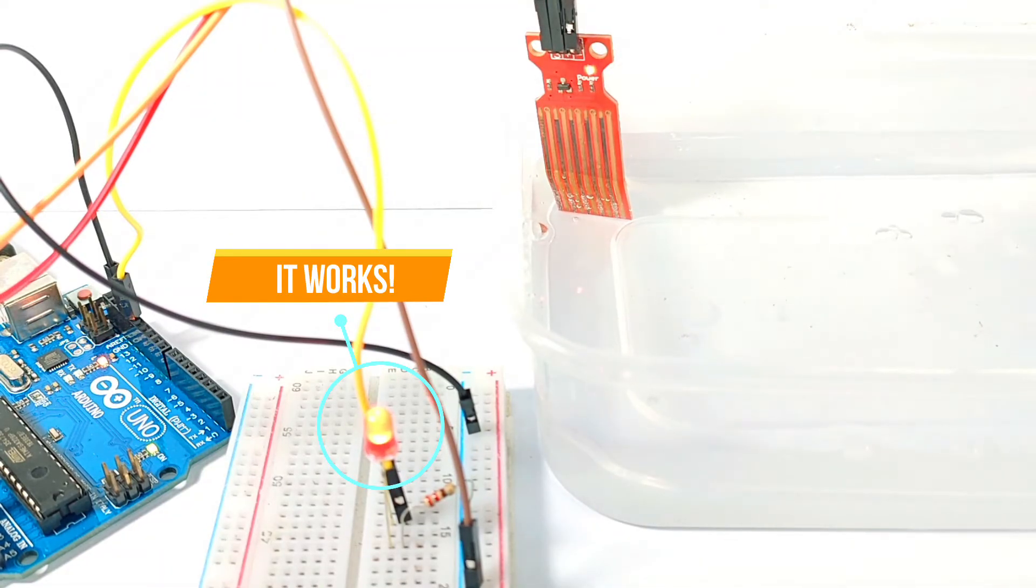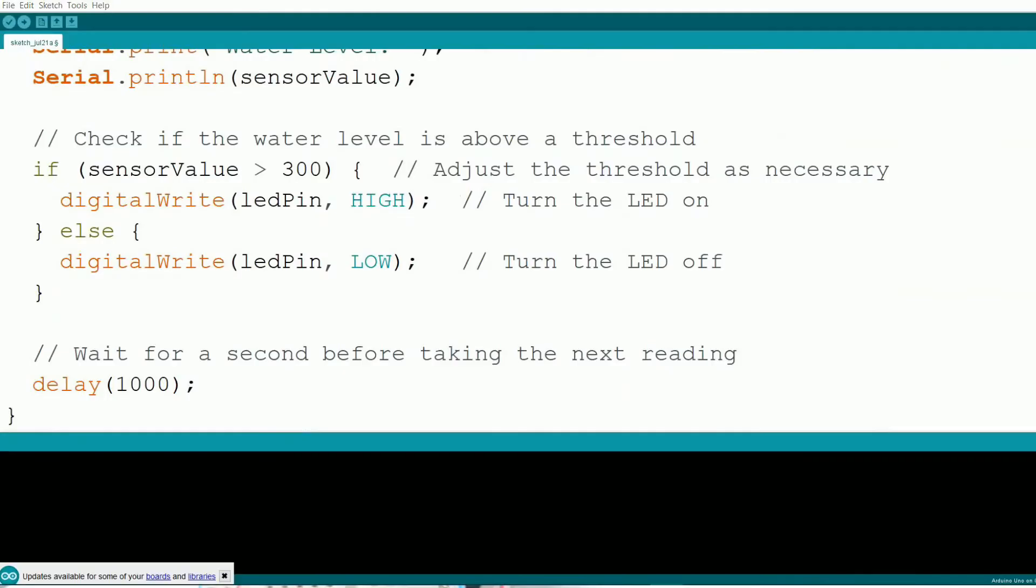As you can see, the LED lights up when the water level goes above the threshold and turns off when it's below. You can adjust the threshold value in the code to suit your specific needs.